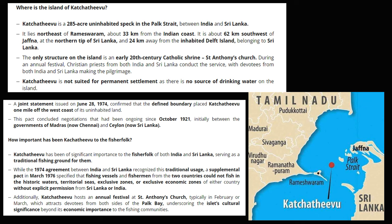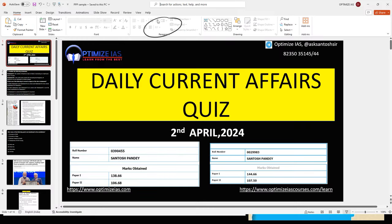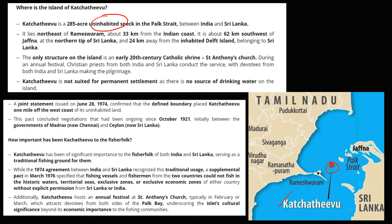Map work is very important. Kachativu Island is an uninhabited island in the Palk Strait between India and Sri Lanka. One important point is that Kachativu Island was given to Sri Lanka as per the 1974 agreement. Currently, fishing by Indian fishermen is not allowed around Kachativu Island, although there is an annual festival called the St. Anthony's Church Festival where Indian fishermen can visit the island. This is a very important topic.